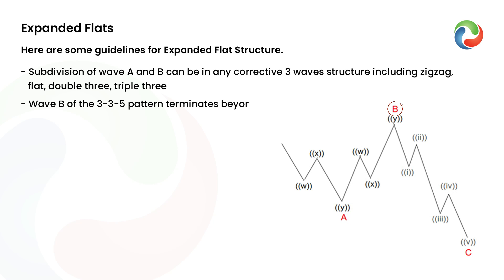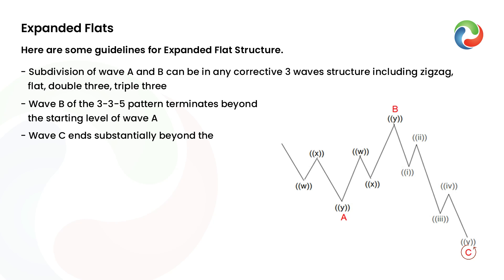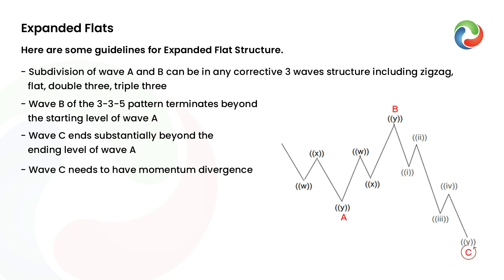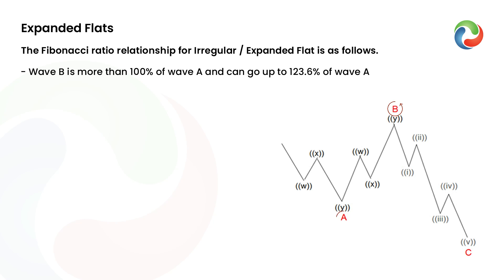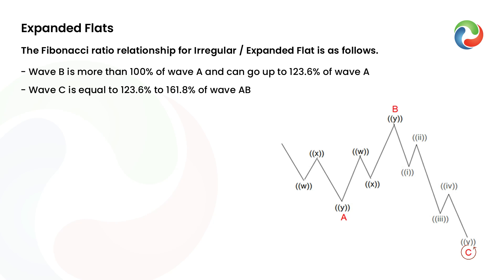Wave B of the 3-3-5 pattern terminates beyond the starting level of wave A. Wave C ends substantially beyond the ending level of wave A. Wave C needs to have momentum divergence. The Fibonacci ratio relationship for irregular/expanded flat is as follows: Wave B is more than 100% of wave A and can go up to 123.6% of wave A. Wave C is equal to 123.6% to 161.8% of wave AB.